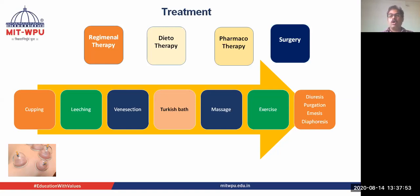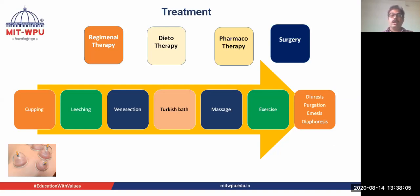In summary, the Unani system revolves around four elements and their organic transformation into humors. Humor determines the temperament based on the dominant humor present. Humor also produces subtle and gross components — the subtle component forming the Ru and the gross components forming the Adha. Functions and faculties are represented by these organs.